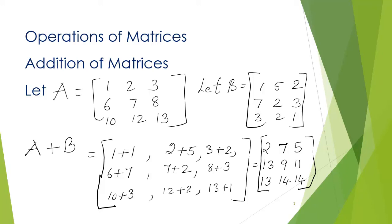What we get? 2, 7, 5, 13, 9, 11, 13, 14, 14. This is the final answer for addition of matrices.